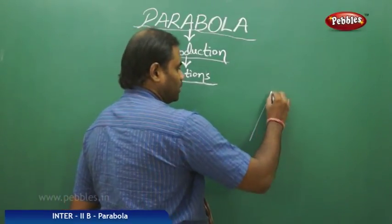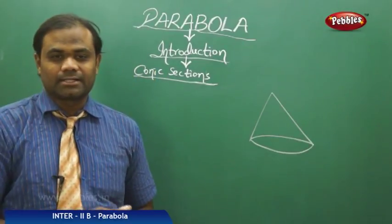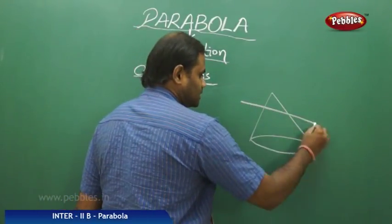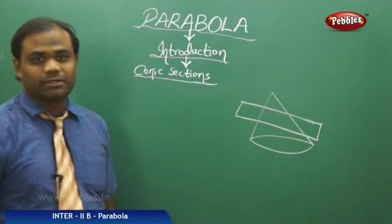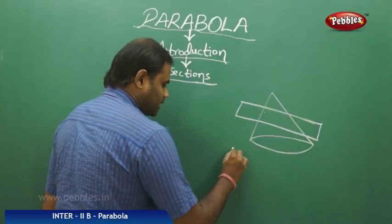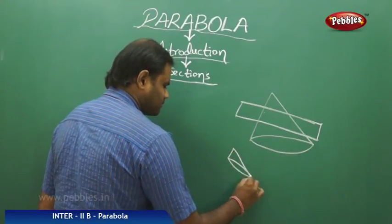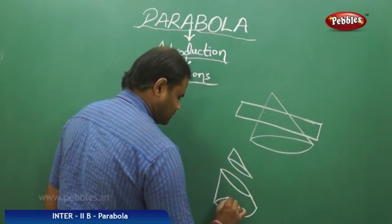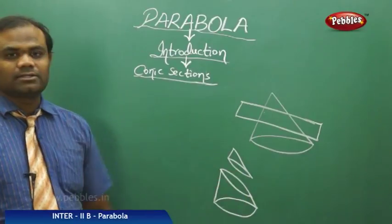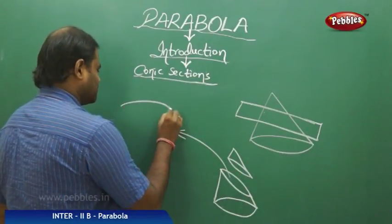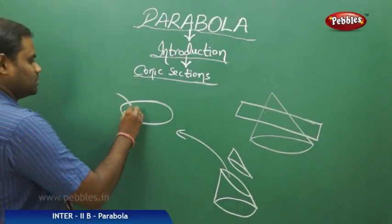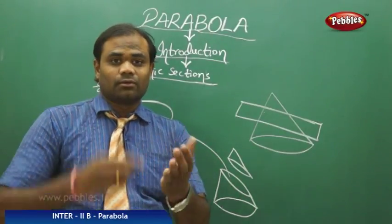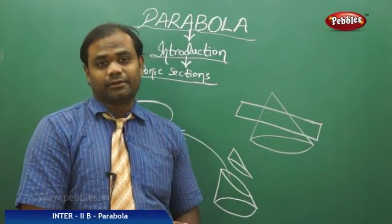If I have a cone and cut it perpendicular to the base, I get a circle. But if I cut it slantingly — other than at 90 degrees — the shape I obtain is somewhat like an egg shape, which is an ellipse. An ellipse is an oval shape obtained when the cone is cut other than at 90 degrees in this manner.